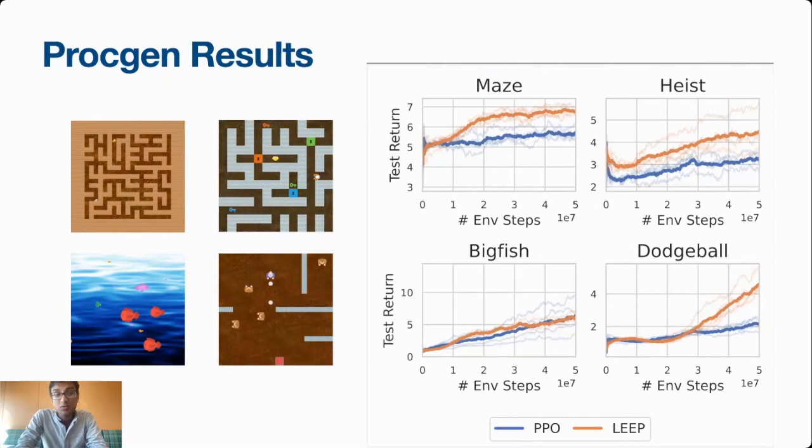It turns out that this algorithm that we have, LEEP, does much better than PPO on these tough generalization problems in the ProcGen benchmark, particularly Maze and Heist here. The idea is simple. PPO learns policies that continually make the same mistakes over and over again, for example, maybe running into a wall or not collecting the key it needs to get the environment. If it keeps making that same mistake, it gets stuck. Whereas LEEP learns policies that are stochastic enough to avoid these kinds of failure modes and more reliably solve the task.